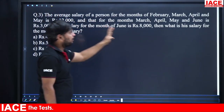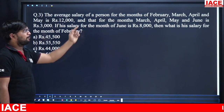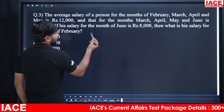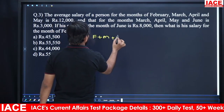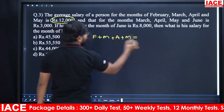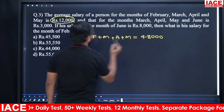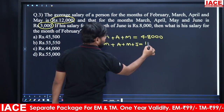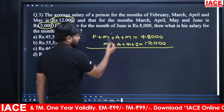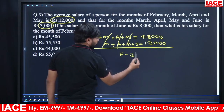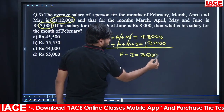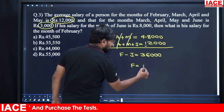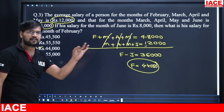The average salary for February, March, April and May is 12,000, so their sum is 4 × 12,000 = 48,000. The average for March, April, May and June is 3,000, so their sum is 4 × 3,000 = 12,000. Subtracting: February minus June = 48,000 − 12,000 = 36,000. June salary is 8,000, so February salary = 36,000 + 8,000 = 44,000. Option C is the right answer.